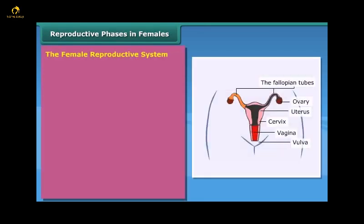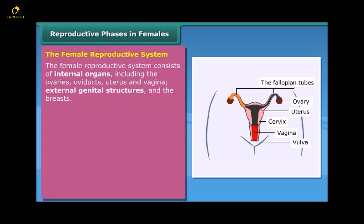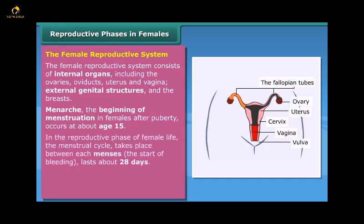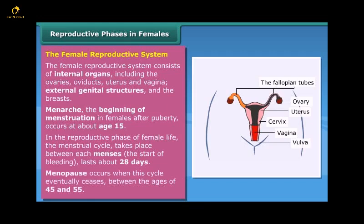Reproductive phases in females: the female reproductive system consists of internal organs including the ovaries, oviducts, uterus and vagina, as well as external genital structures and the breasts. Menarche — the beginning of menstruation in females after puberty — occurs at about age 15. In the reproductive phase of female life, the menstrual cycle takes place between each menses; the start of bleeding lasts about 28 days. Menopause occurs when this cycle eventually ceases, between the ages of 45 and 55.